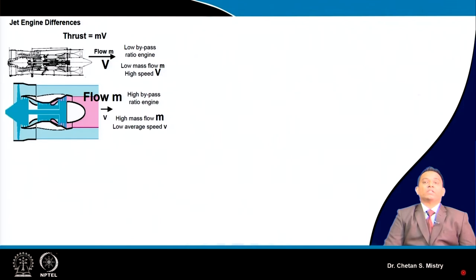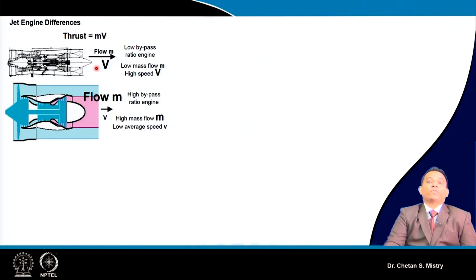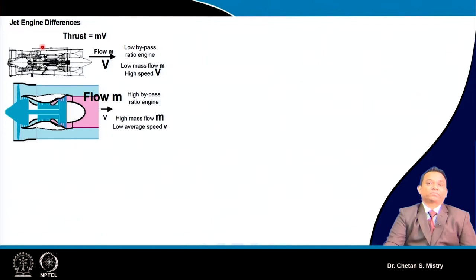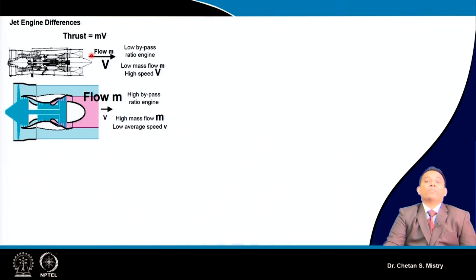Earlier we had turbojet engines where thrust was fulfilled by mass flow rate times exhaust velocity. Thrust can be increased by increasing either mass flow rate or exhaust velocity. However, since the dimensions of a turbojet engine are fixed, increasing mass flow rate is constrained. Increasing exhaust velocity requires higher turbine entry temperature, which is constrained by the turbine material.